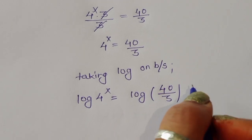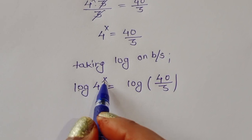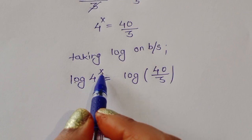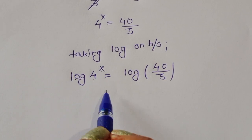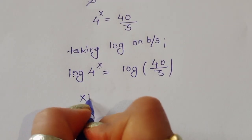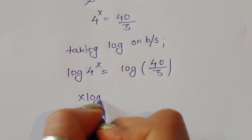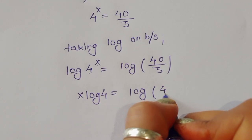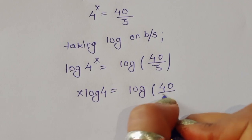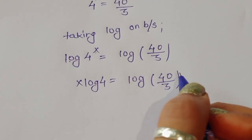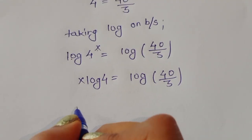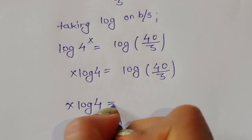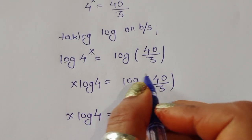We use the formula log(a^b) = b·log(a). So log(4^x) becomes x·log(4). Therefore x·log(4) = log(40/3).